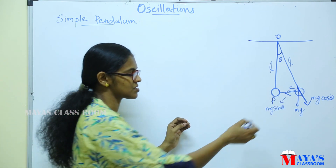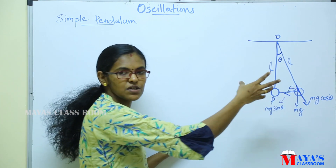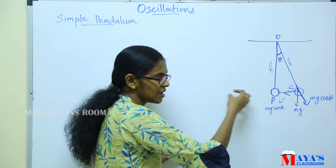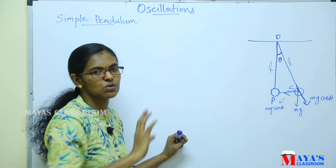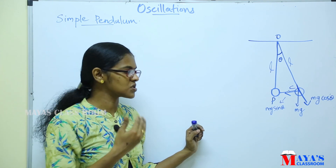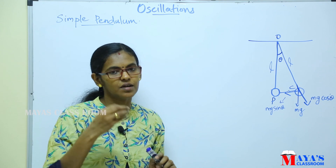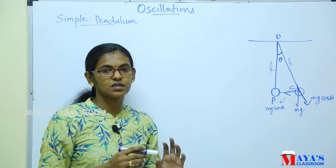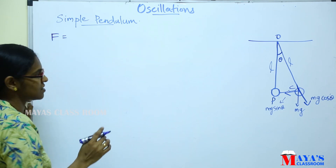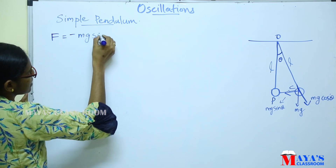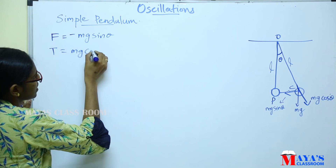The component mg sinθ is perpendicular to the string and acts as the restoring force causing oscillation. The component mg cosθ acts along the string. Therefore, the tension T equals mg cosθ.